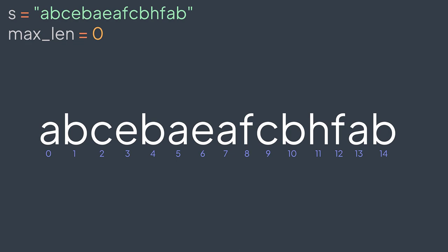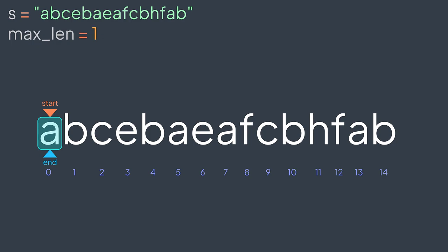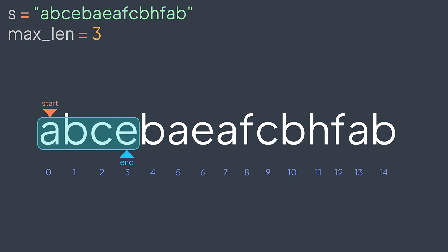Let's combine these two ideas and apply them on this example. Our first substring starts and ends at index zero — no repeating characters, valid substring of length one. We increment end. We still have no repeating characters and our substring has length two — it replaces one. Next, end is at index two: still no repeating characters, valid substring of length three. Then a, b, c, e — still no repeating characters, valid substring of length four, replacing three.